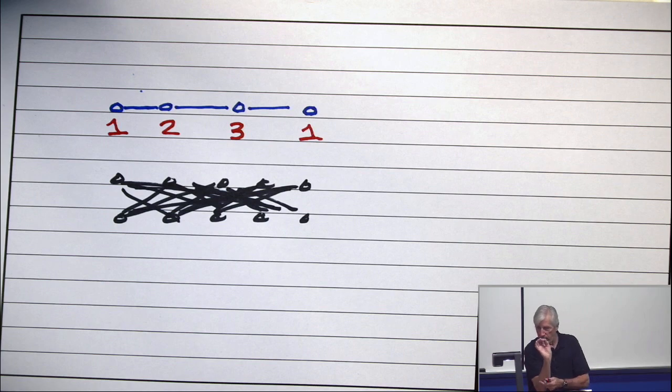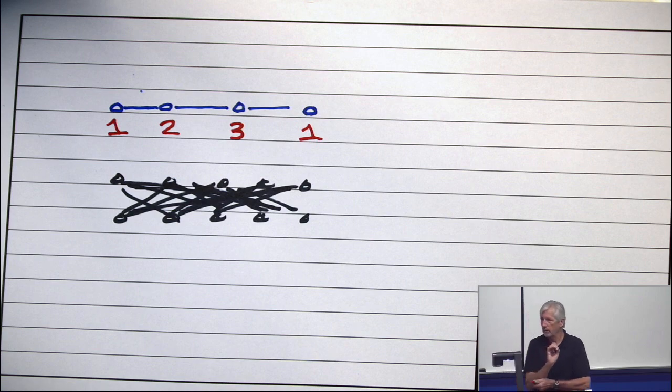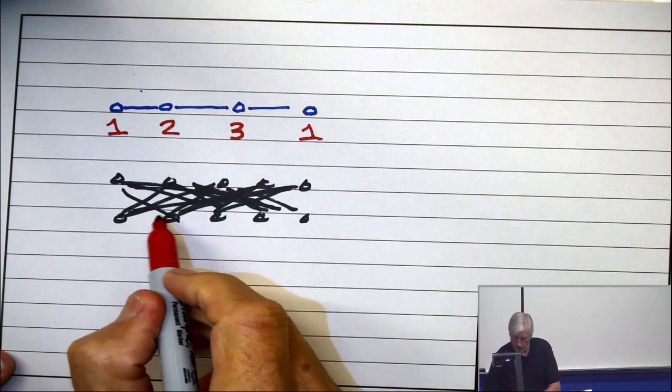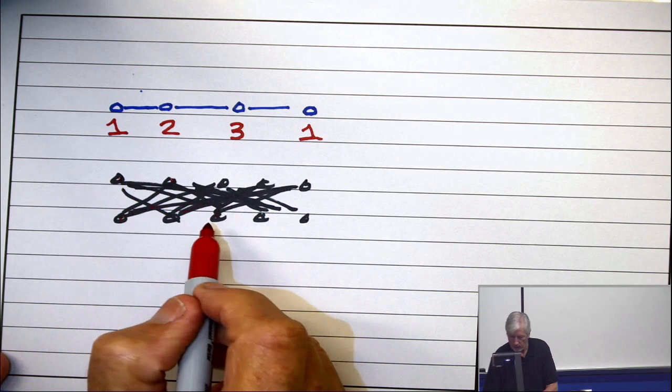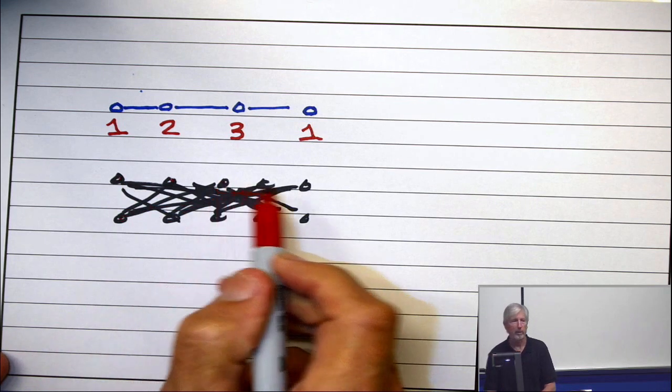And I have all edges between the bottom and the top, except everyone on the bottom has a mate on the top. And he's not adjacent to the mate. So this vertex is not adjacent to that one. This one is not adjacent to that one. This one is not adjacent to that one, et cetera.